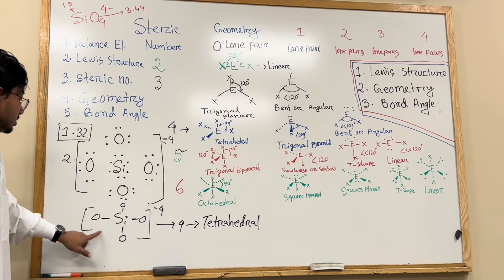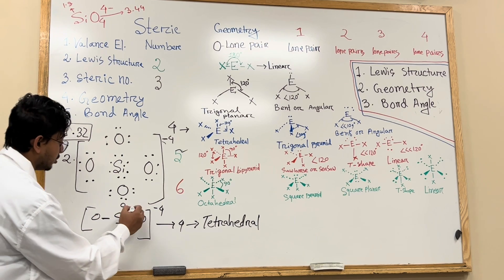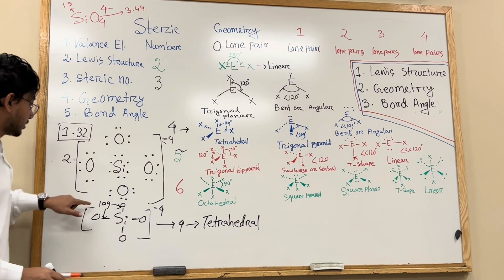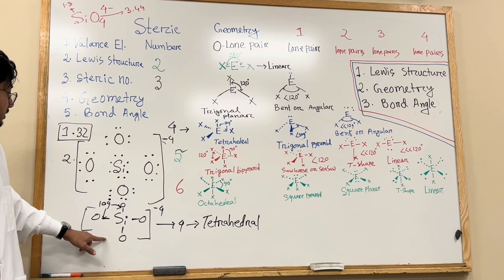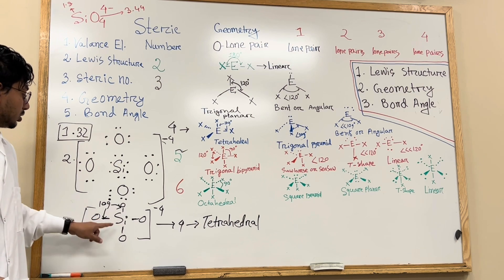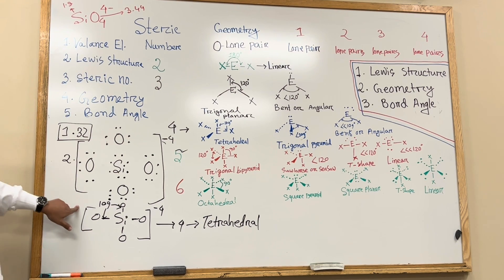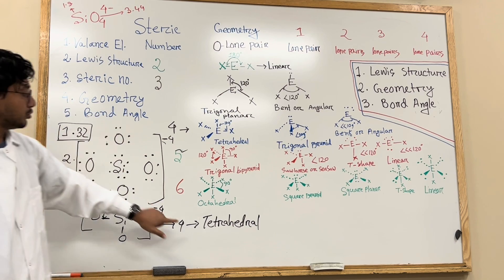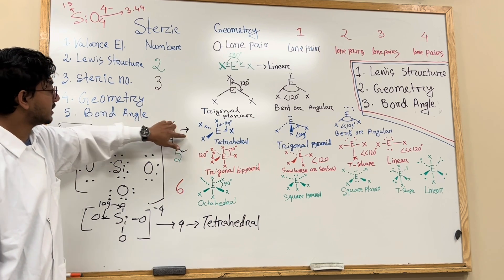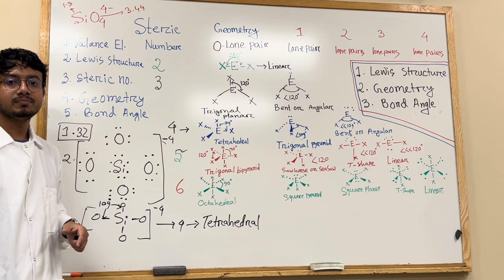The geometry is tetrahedral, and because there is no lone pair, the bond angle will be 109.5 degrees. There is no impact of a lone pair on the bond angle because this compound has no lone pair. So we got the Lewis structure, the geometry which is tetrahedral, and the bond angle of 109 degrees — because the steric number of four corresponds to tetrahedral geometry with a 109-degree bond angle. Thank you.